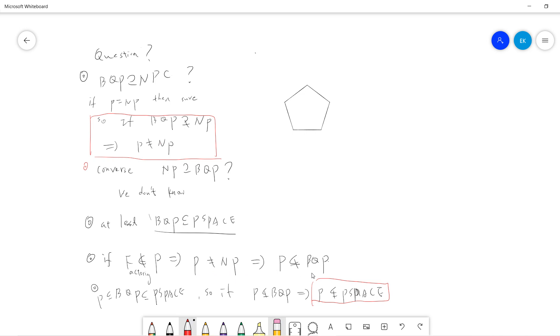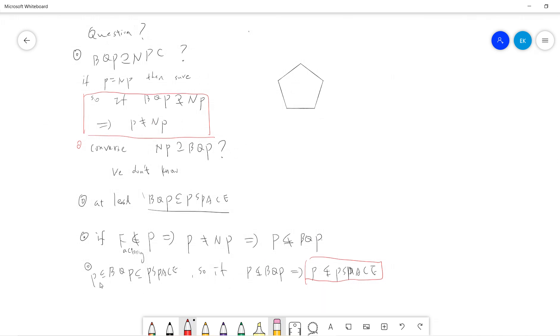This will also imply that P is strictly contained in BQP. There's no equality here. The reason is that factoring is in BQP, but now factoring is not in P.